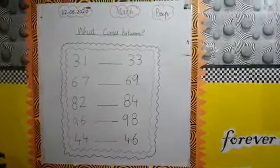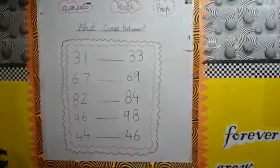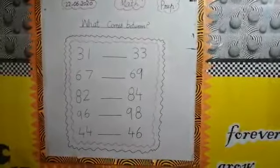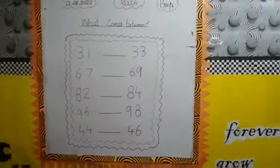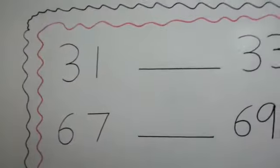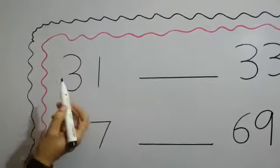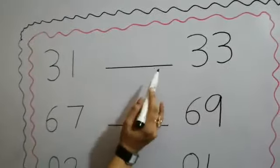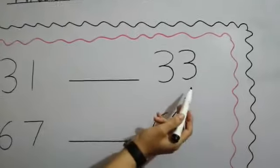What comes between? What does this mean? It means that we have written some numbers here and we have a missing number. Like, our first number is 31. And in the center, we have a missing number. We have written 33.